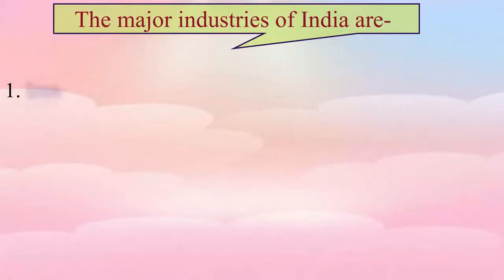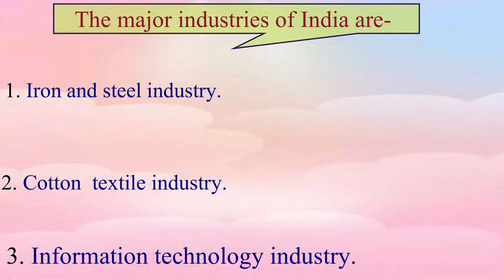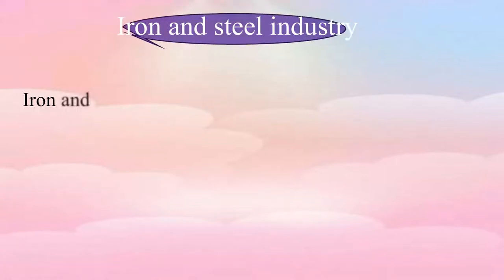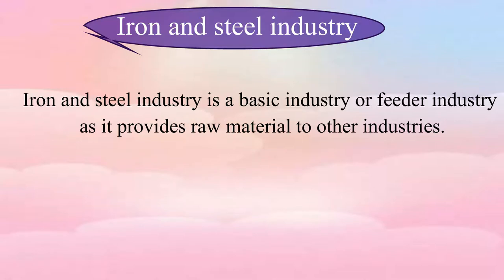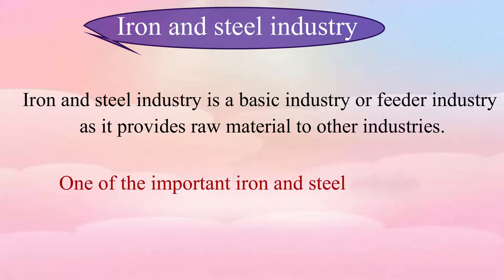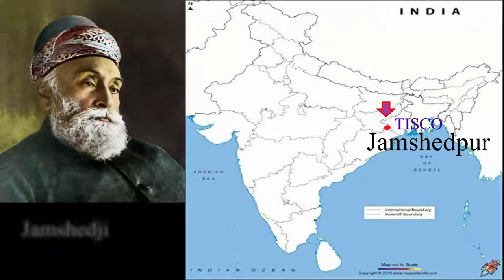The major industries of India are iron and steel industry, cotton textile industry, and information technology industry. Iron and steel industry is a basic industry or feeder industry as it provides raw material to other industries. One of the important iron and steel industries of India is Tata Iron and Steel Company in Jamshedpur. It was set up by Jamshedji Tata in 1907.